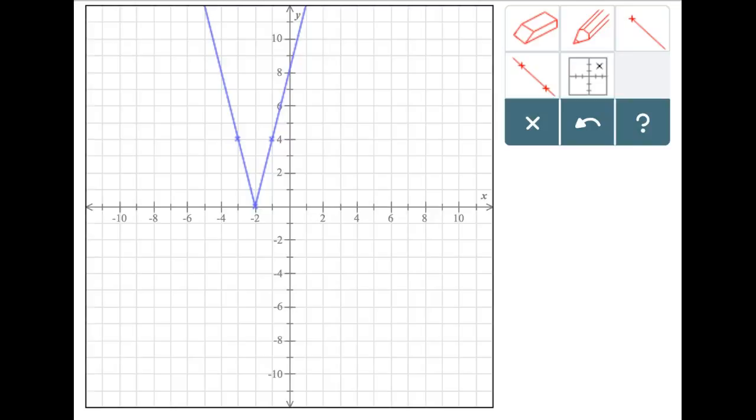Alright, so I think I got it, but let me summarize what we did, just to make sure. First, you find the vertex of the equation, and you do this by finding what x value will result in an absolute value of 0 for the equation. After this, you use the x value in the equation to get your vertex location.